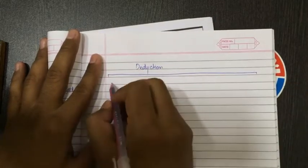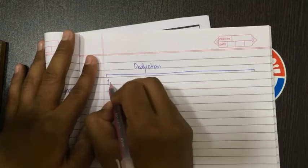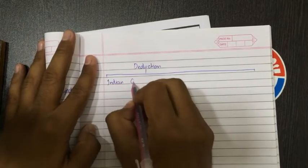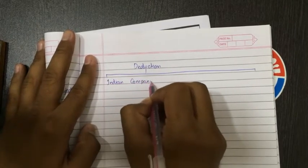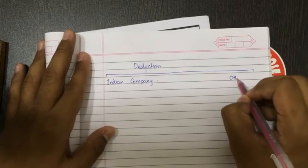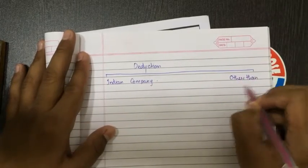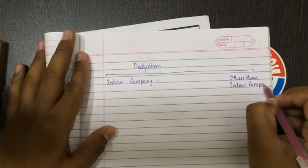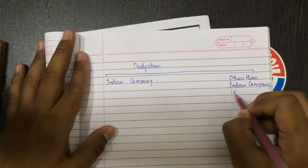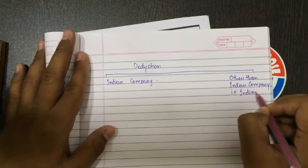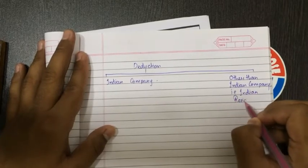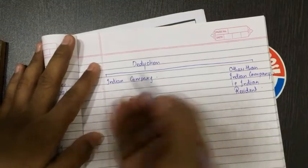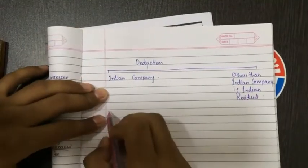Let's draw a chart. In case of Indian company, other than Indian company, that is Indian resident. So how the expenses will be allowed, see.